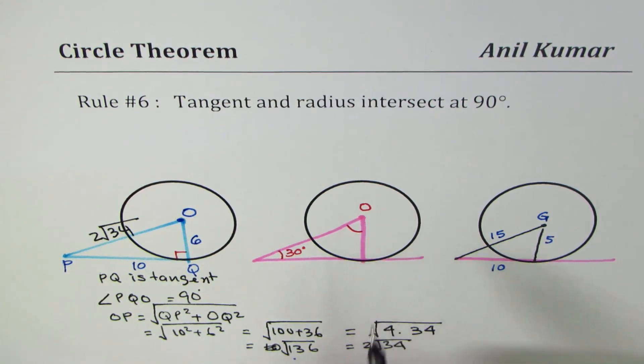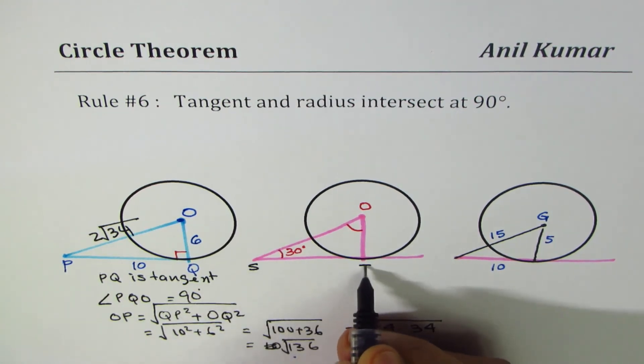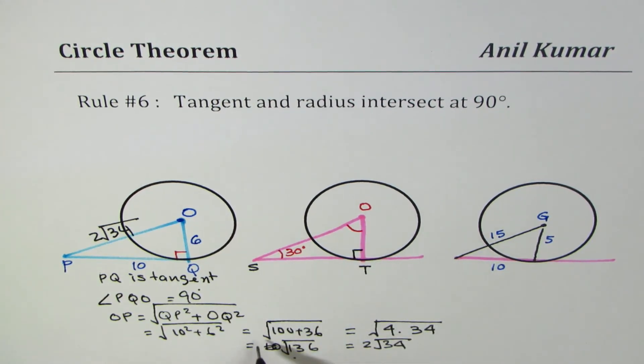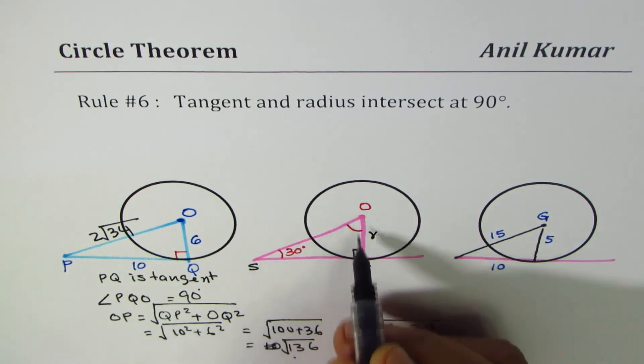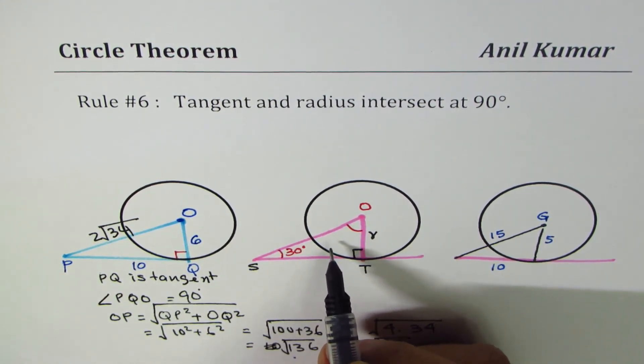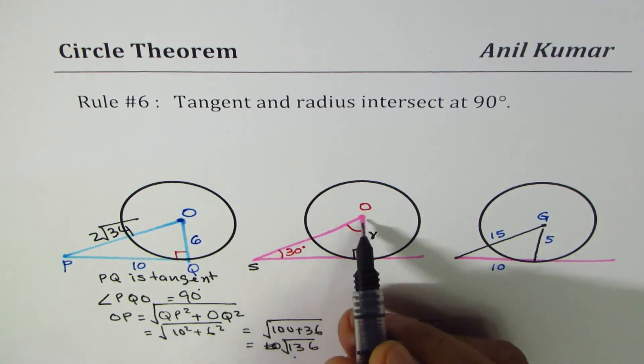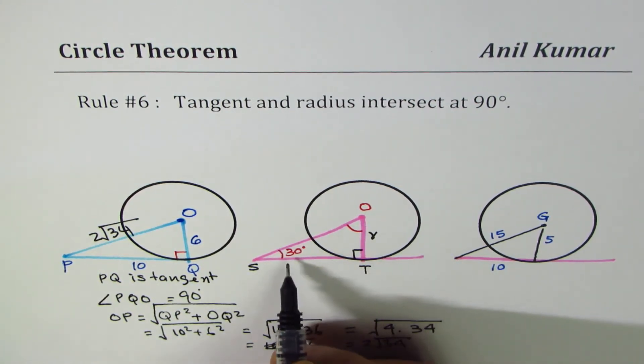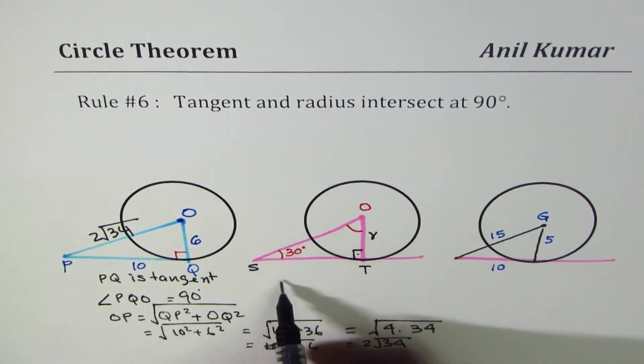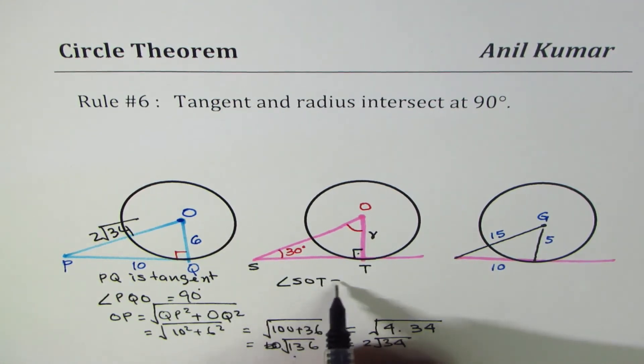Let's look into the second triangle, which is STO. Now since ST is a tangent, it makes 90 degrees with the radius. So the angle SOT should be 90 minus 30 degrees, since this is 90.